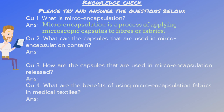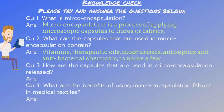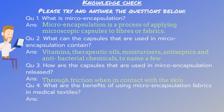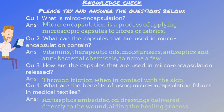Answer one: microencapsulation is the process of applying microscopic capsules into fibers or fabrics. Number two: vitamins, therapeutic oils, moisturizers, antiseptics, and antibacterial chemicals, to name a few. Number three: through friction when in contact with the skin. And number four: antiseptics embedded on dressings delivered directly to the wound, aiding the healing process.